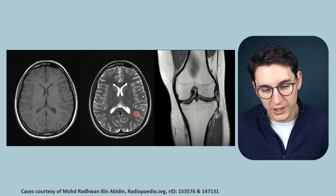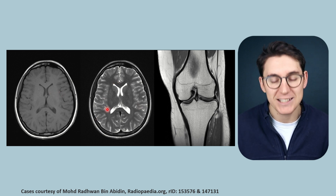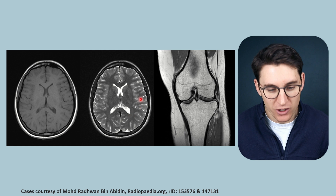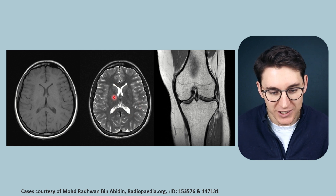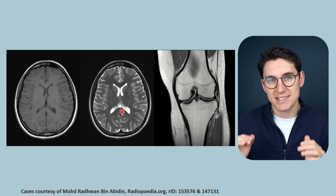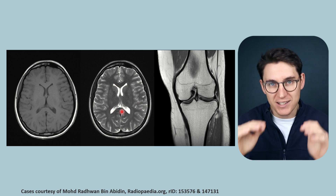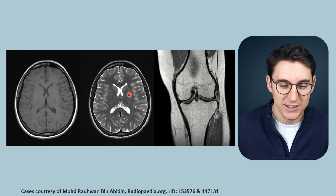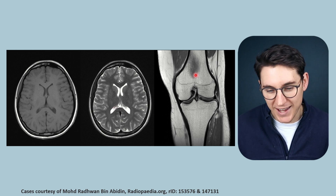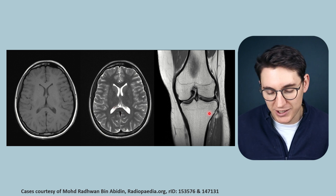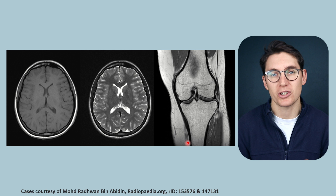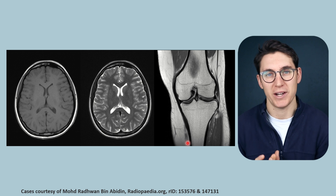Or we can create a T2 weighted image where the contrast is because of the T2 relaxation rates that differ within different tissues. And we're also going to look at a different type of weighting known as proton density weighting.